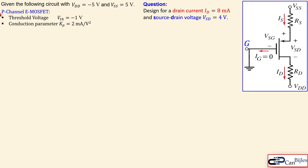For the p-channel enhancement MOSFET, the threshold voltage is minus one volt, and Kp, the conduction parameter, is two milliamps per square volt. Those are the known parameters for the MOSFET component.